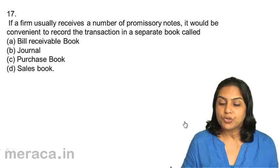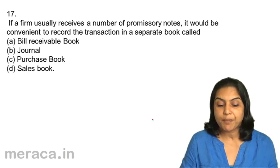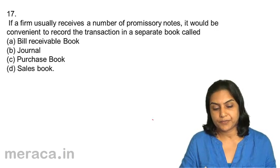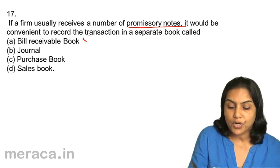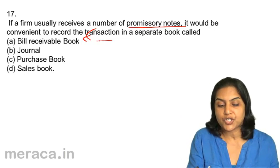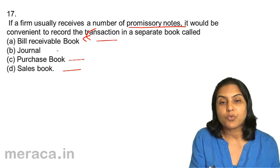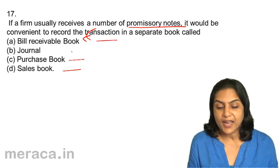Question 17: If a firm usually receives a number of promissory notes, it would be convenient to record the transactions in a separate book called: A. Bills Receivable Book, B. Journal, C. Purchase Book, D. Sales Book. A large number of promissory notes and Bills of Exchange would be recorded in the Bills Receivable Book. Purchase Book records credit purchases, Sales Book records credit sales, Journal records all other transactions. Correct answer: 17A, Bills Receivable Book.